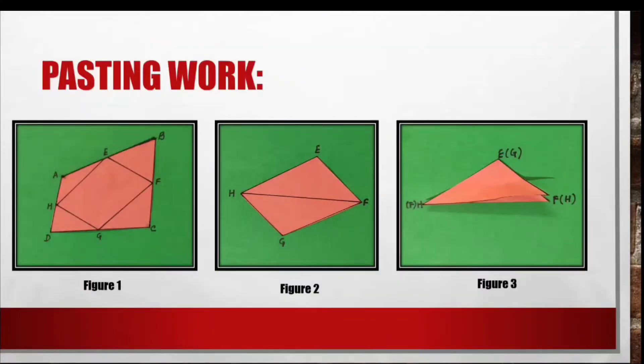Let us see the pasting work now. In figure 1, we have first pasted the quadrilateral A, B, C, D. Then we have found out its midpoints by the paper folding method. And after that we have joined the midpoints E, F, G, and H to get the quadrilateral E, F, G, H.